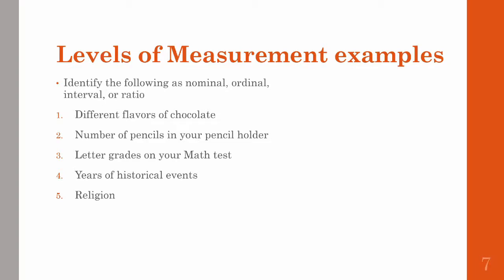So before we end this video, let's go over a couple examples and see if you can guess which type of measurement each is. The first is the different flavors of chocolate. The second is the number of pencils in your pencil holder. The third is letter grades on your math test. The fourth is years of historical events. And the fifth is different types of religions. So go ahead and pause this video and try and write down your answers, and we'll go over them here in just a second.